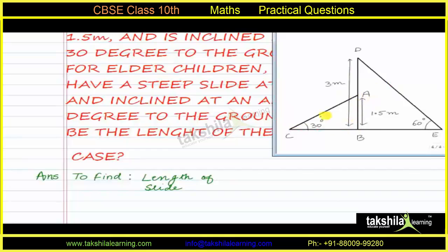Slide ABC is for children below the age of five years. The height of this slide, AB, is 1.5 meters and it is inclined at an angle of 30 degrees. Slide DBE is for elder children — its height is 3 meters and it is inclined at an angle of 60 degrees. We have to find the length of slide AC and slide DE respectively.